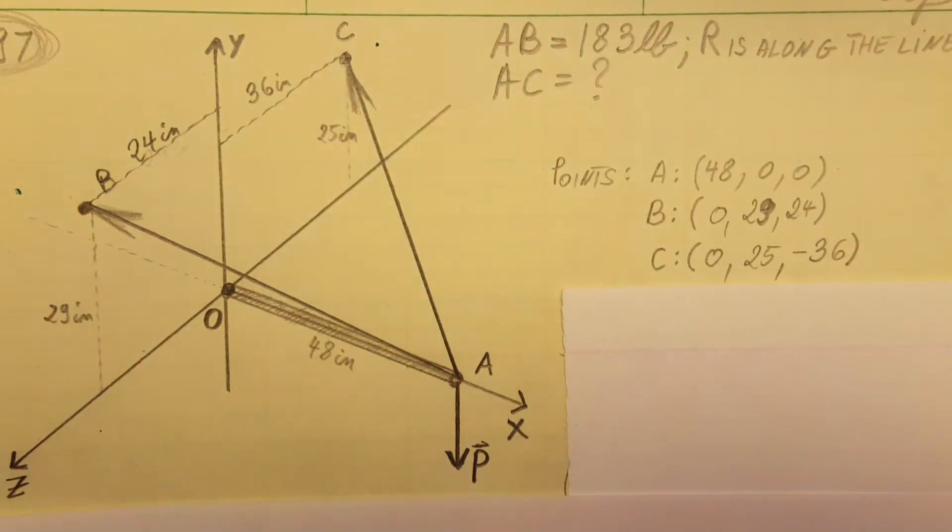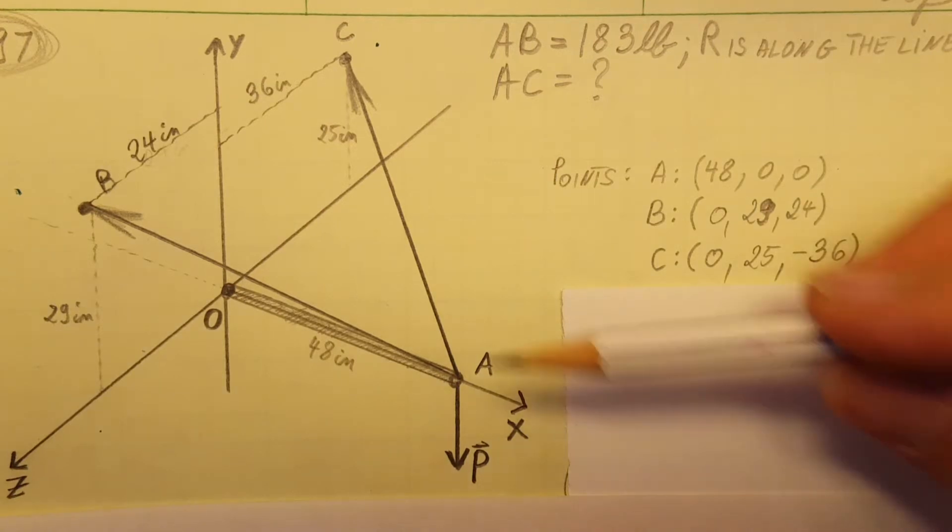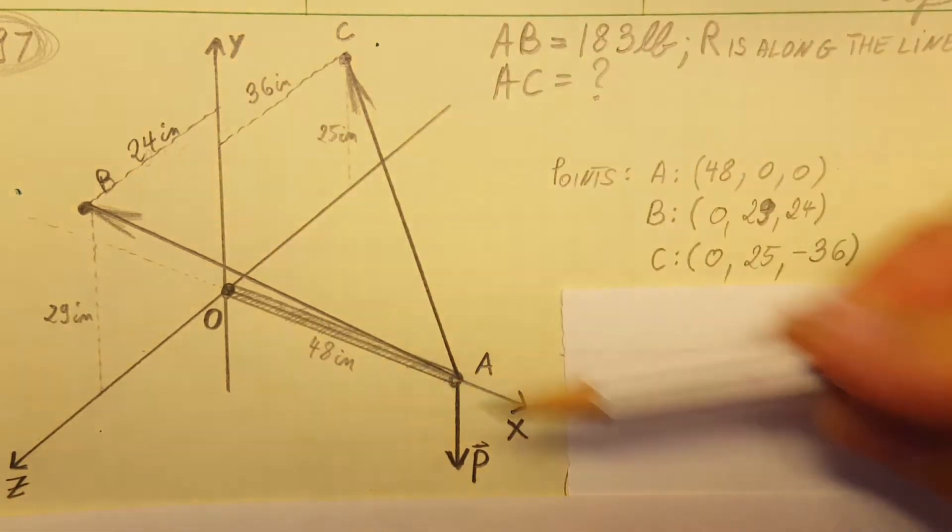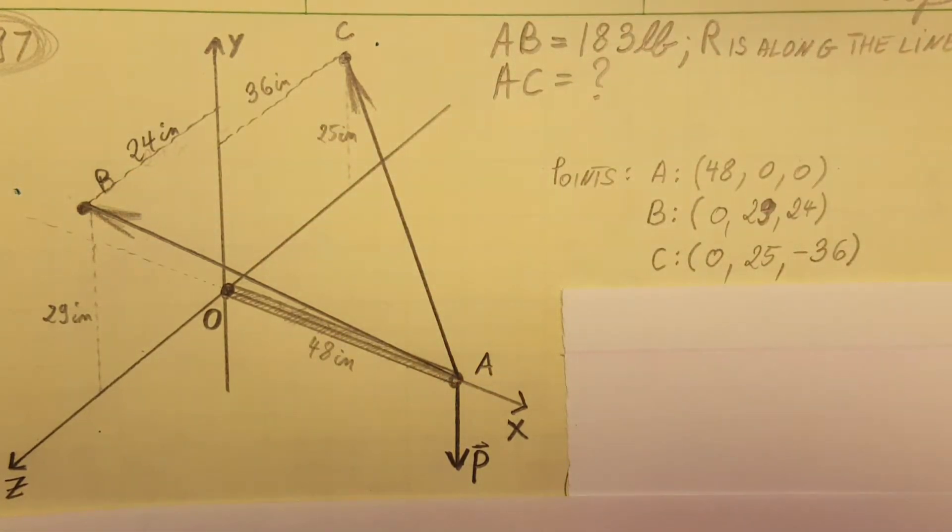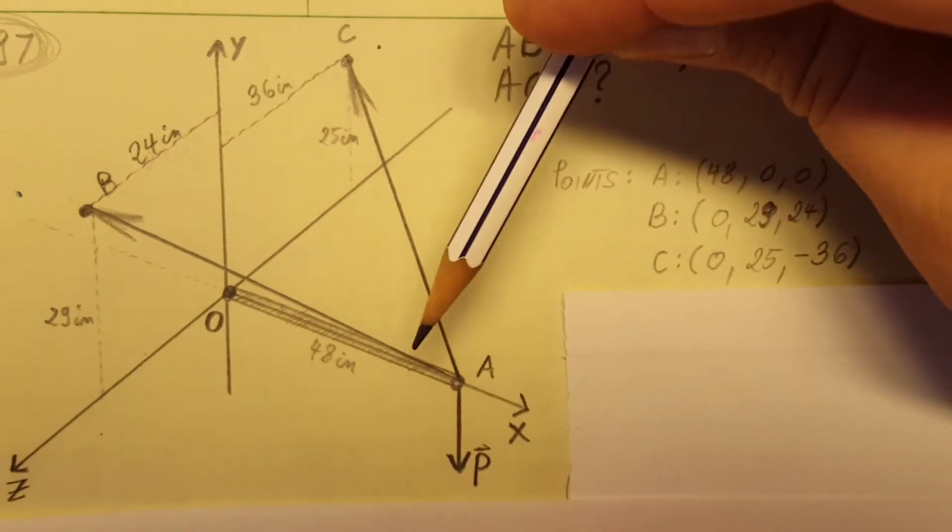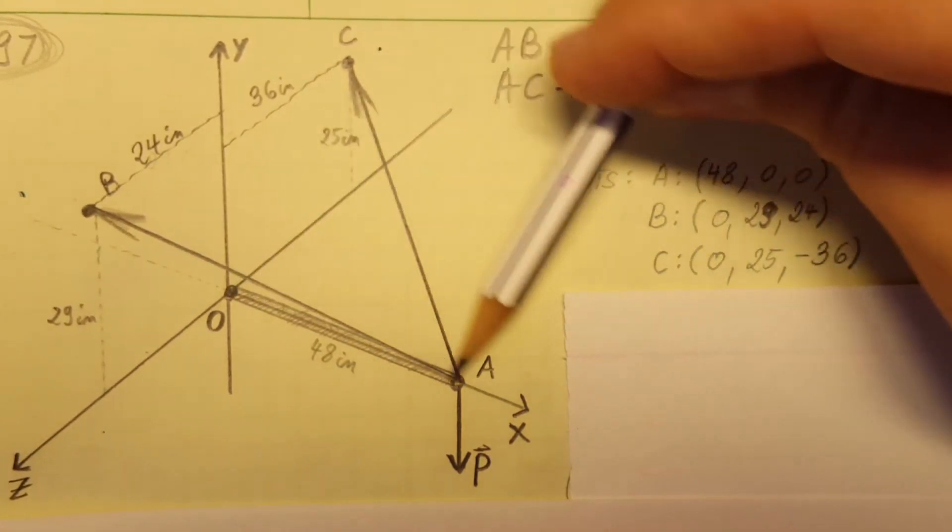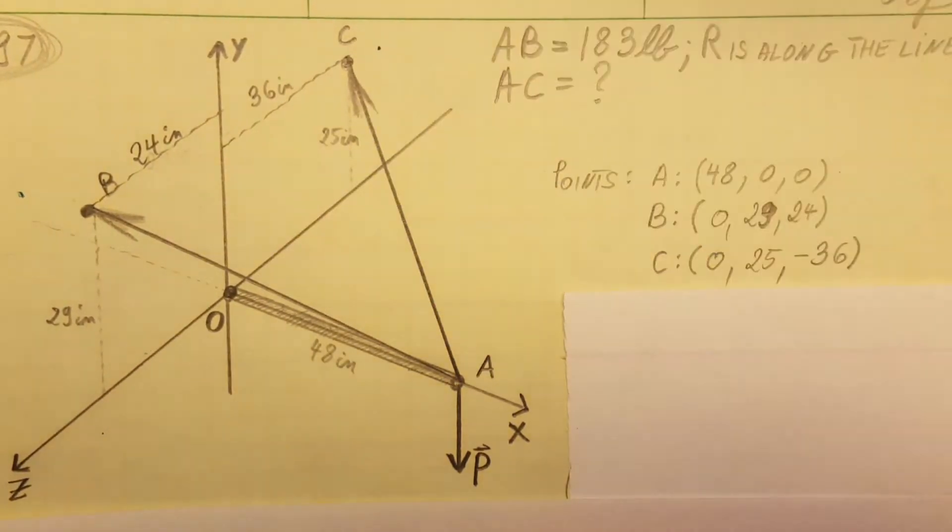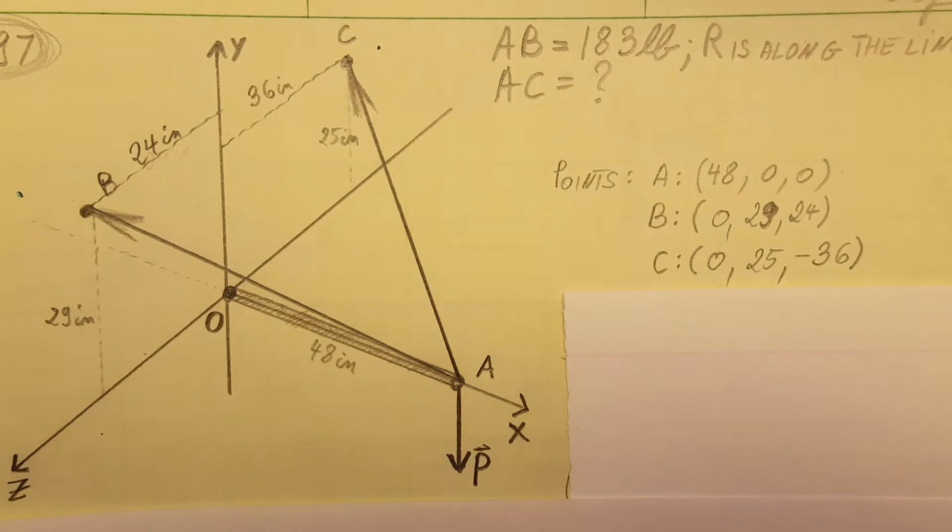We know that the tension in cable AB right here is 183 pounds. We also know that the resultant of these three forces will be along OA, right here along this boom.